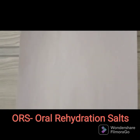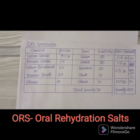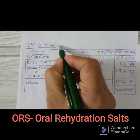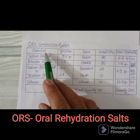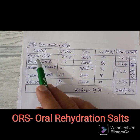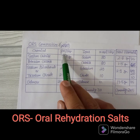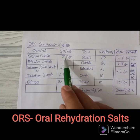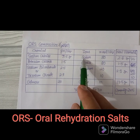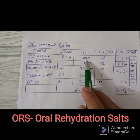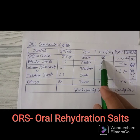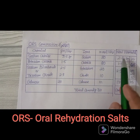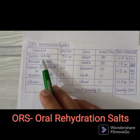Now, the composition of ORS is commonly asked in exams. This is the WHO-recommended ORS composition. The first chemical is sodium chloride at 3.5 grams per liter, with a sodium ion concentration of 90 millimoles per liter. The second is potassium chloride at 1.5 grams per liter, with a chloride ion concentration of 80 millimoles per liter.